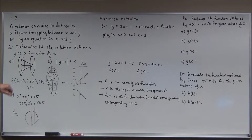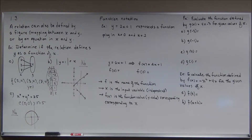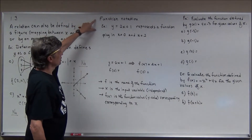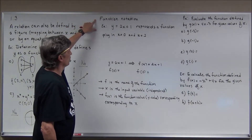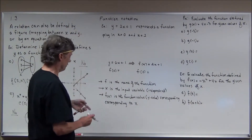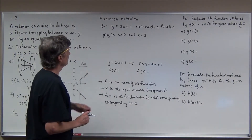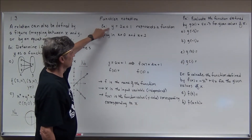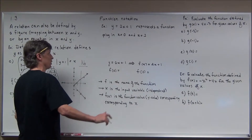So the first one was a function; the other two were not. When we have a relation and we're trying to determine if it's a function, we look for the idea that every x is used only one time. When we write functions, there's a special notation — I'll explain that with this next example. y = 2x + 1 is a function; it's a linear function.